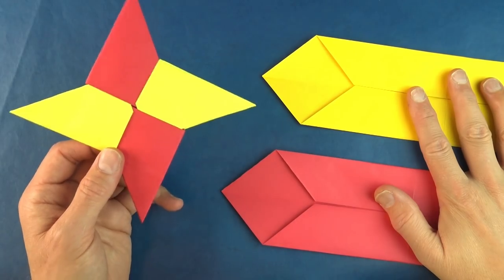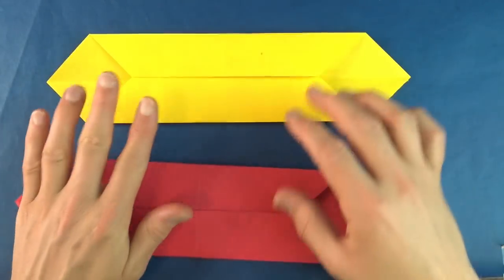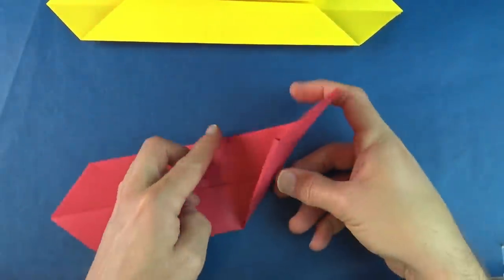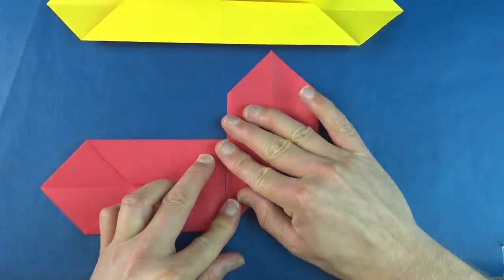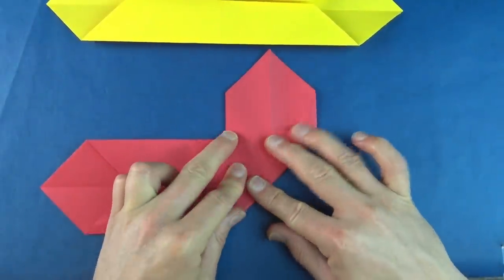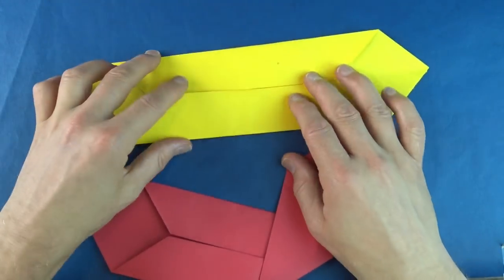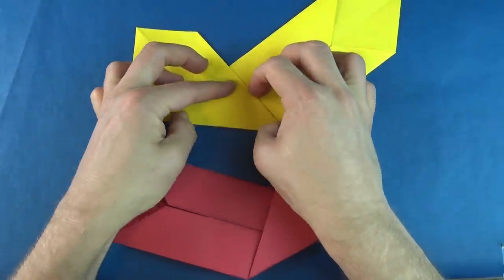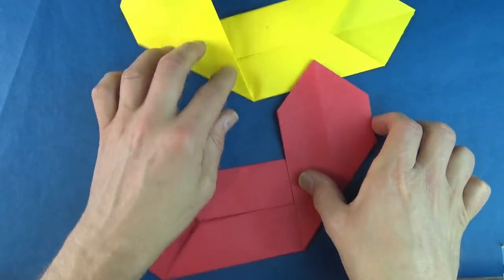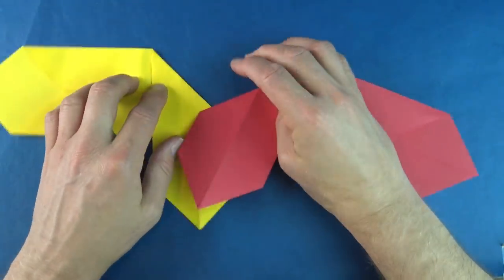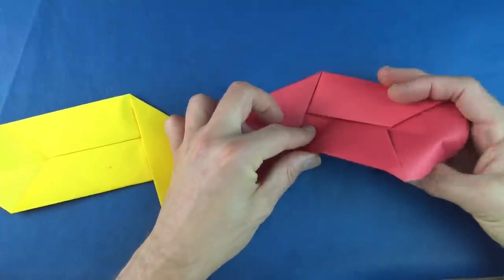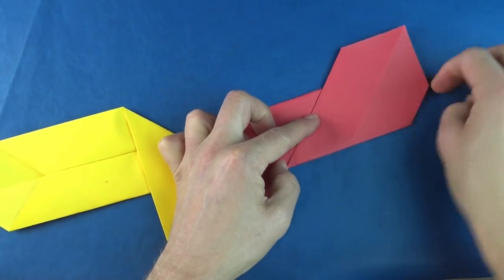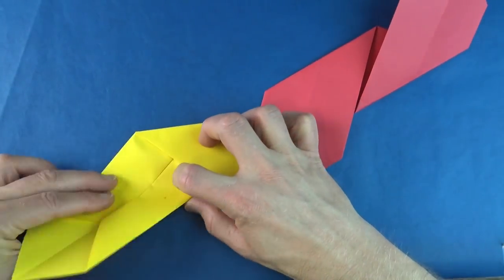Now if you just want to make a clean ninja star, no parallelogram flicker, then this is what you do. You just fold the right side up, aligning it with the crease. And the left side up on this one. And now rotate and fold the right side up on this one.